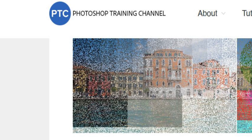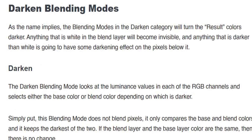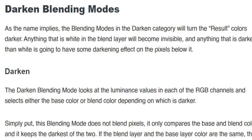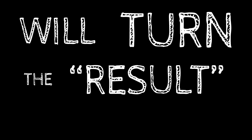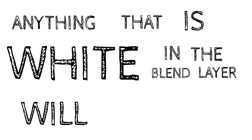How can the darkened blending mode help us fix this problem? First, it's important to understand how it works. According to photoshoptrainingchannel.com, blending modes in the darkened category will turn the result colors darker. Anything that is white in the blend layer will become invisible.